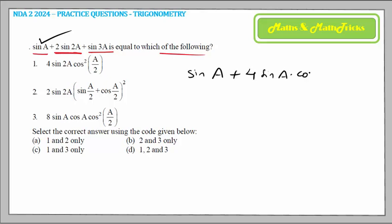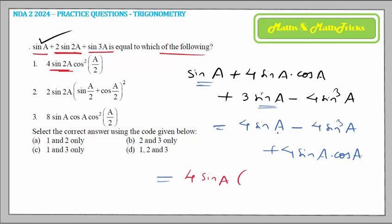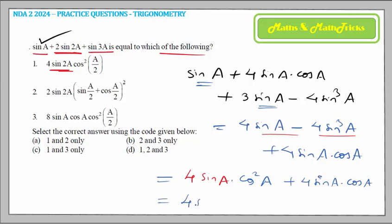We have sin a as it is. Then 2 sin 2a can be written as 4 sin a × cos a using the sin 2a formula. And sin 3a = 3 sin a - 4 sin³a. So we get sin a + 3 sin a = 4 sin a, minus 4 sin³a, plus 4 sin a cos a. Taking 4 sin a common from the first two terms leaves (1 - sin²a) = cos²a.